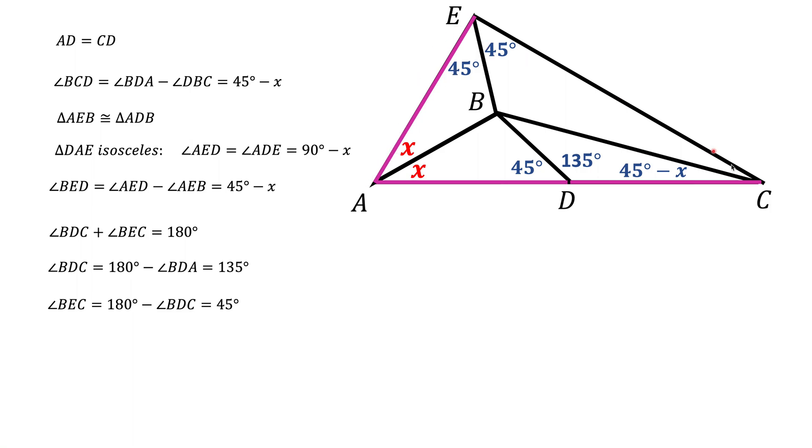So triangle AEC is a right triangle. But it's not just an arbitrary right triangle, it's a special right triangle. Because notice that the leg AE is half of the hypotenuse AC, and that is something called a 30-60-90 degree triangle. So it's a triangle that has angles 30, 60, 90 degrees.